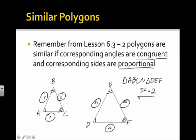Now that we've refreshed similar polygons, let's talk about how we can conclude that triangles in particular are similar without having to show all three angles and all three sides. Let's move on to the next slide.